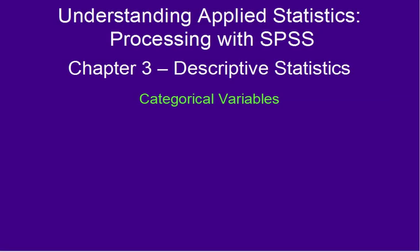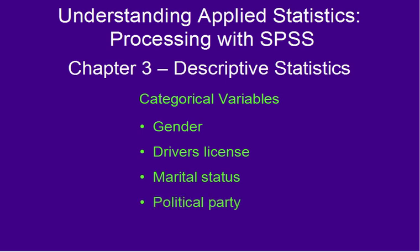With categorical variables, we're talking about variables that fit into discrete categories. For instance, gender could be coded female, male. Another category could be driver's license. An individual either does or does not hold a valid driver's license. They could also encounter more than two categories per variable. For instance, marital status could be single, engaged, married, separated, divorced, widowed. Additionally, political party has more than two choices also. Could be Democrat, Republican, or one of the other parties.